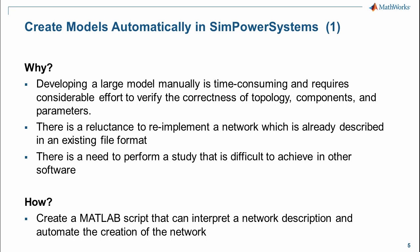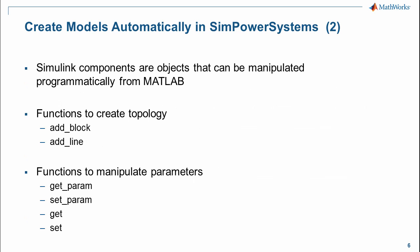The way we create a model automatically in SimPower Systems is to write a MATLAB script that can interpret a network description and automate the creation of the network. This can be done because Simulink components are objects that can be manipulated programmatically from MATLAB. You'll see functions such as add_block and add_line, which create the topology of the network, as well as functions that manipulate object properties and parameters like getParam, setParam, get, and set.